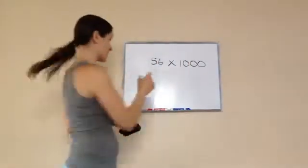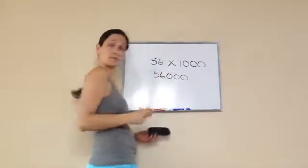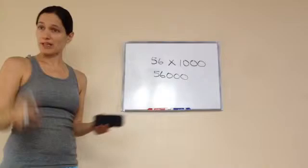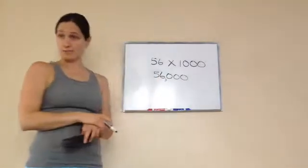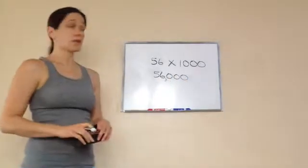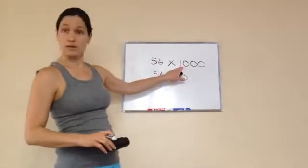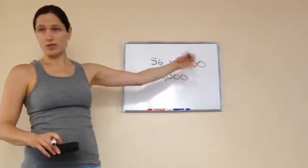56 times a thousand would be what? Three zeros. 56 and three zeros. Isn't that cool? You just quickly do it and you only have to work hard - we put a comma right there because you always do three.